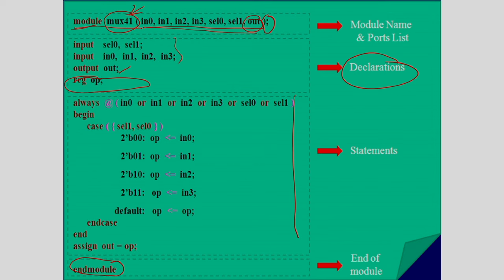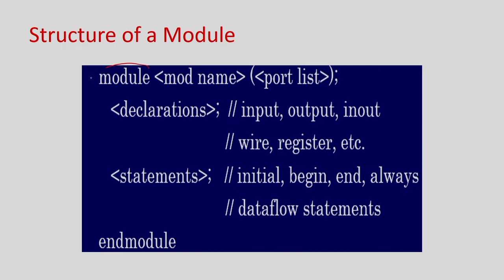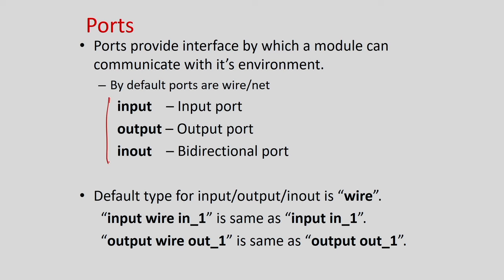The most important thing for a module is the interface — how this module will be interconnected with the outside world, defined by ports. In a module there are input ports, output ports, or inout ports — three kinds. The inout port is bidirectional, meaning from the same port you can give input and also read the output.